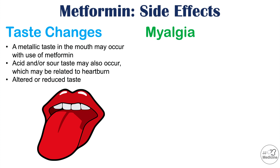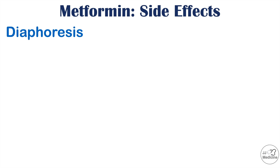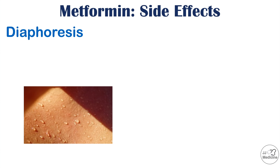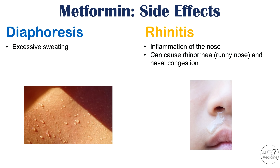Metformin can also cause myalgia — muscle aches and pain — where muscles may be tender to touch. Diaphoresis, which is excessive sweating, is also a possible side effect. Rhinitis, or inflammation of the nose leading to a runny nose and nasal congestion, can also occur, though this is a more rare or uncommon side effect of metformin use.